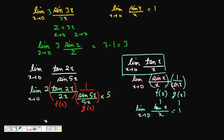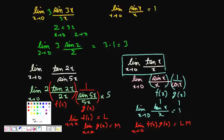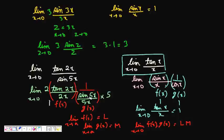Using the product rule for limits — if limit of f(x) as x tends to a is L and limit of g(x) is M, then limit of f(x) times g(x) is L times M — as x tends to 0, tan(2x)/(2x) tends to 1 and sin(5x)/(5x) also tends to 1. So the overall limit is 2 by 5, which is the answer.